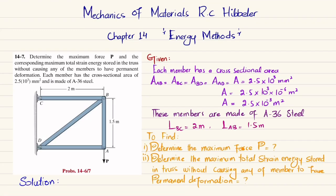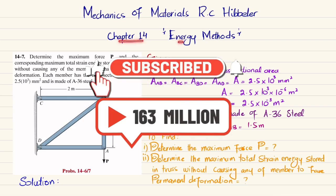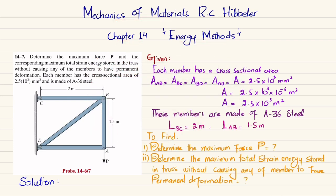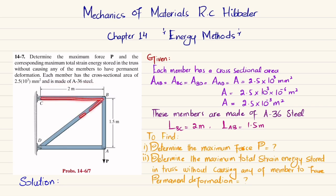Welcome back. In this video we are going to solve problem 14-7 taken from Chapter 14, Energy Methods, from the book Mechanics of Materials by R.C. Hibbeler. The problem statement is: determine the maximum force P and the corresponding maximum total strain energy stored in the truss without causing any member to have permanent deformation. Each member has a cross-sectional area of 2.5 × 10⁻³ square millimeters and is made of A36 steel.